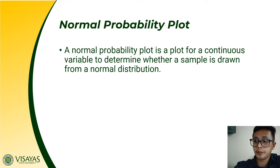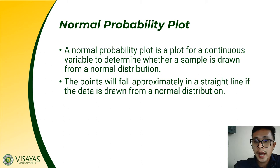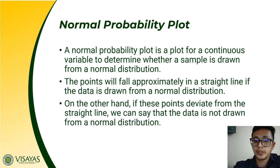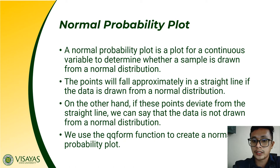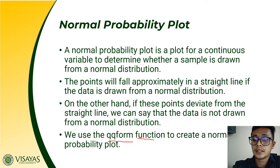This is similar to the histogram with the curve function for checking normality. The points will fall approximately in a straight line if the data is drawn from a normal distribution. If points deviate from the straight line, the data is not from a normal distribution. To create a normal probability plot, we use the qqnorm function — plot for basic plots, hist for histograms, and qqnorm for normal probability plots.